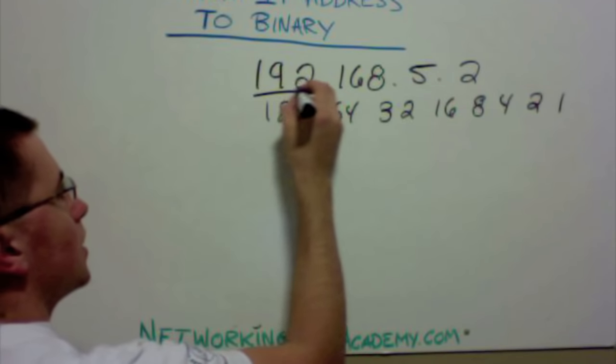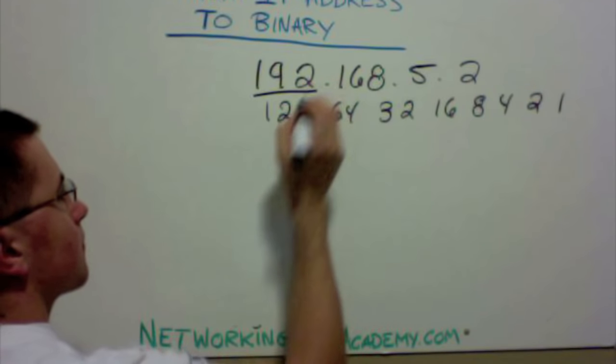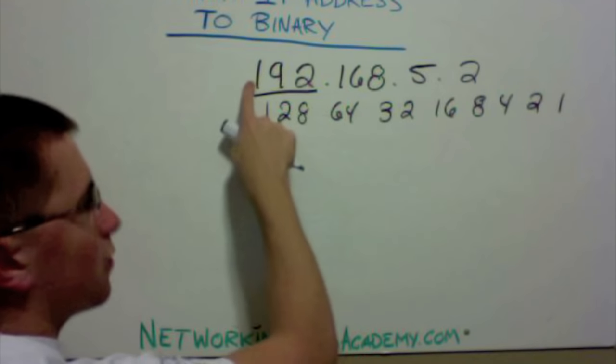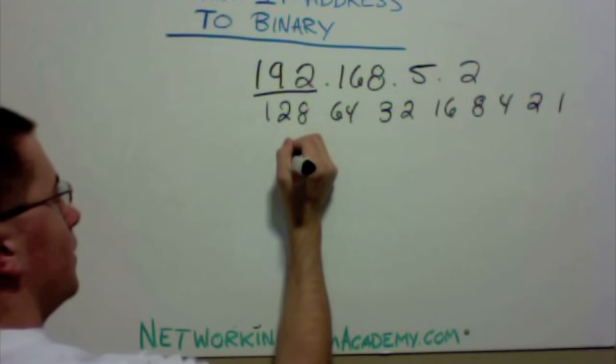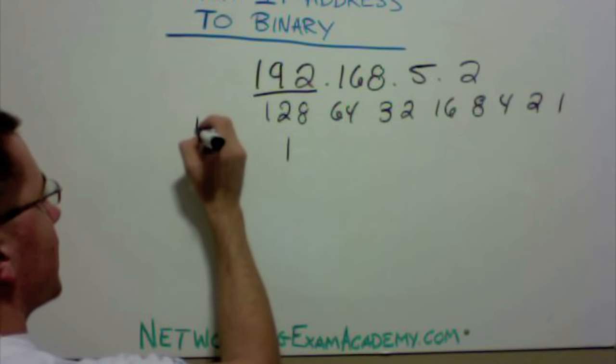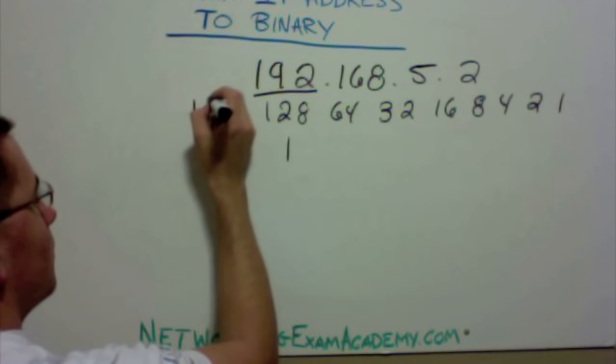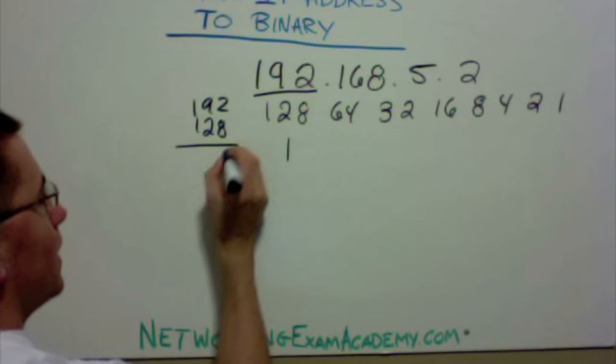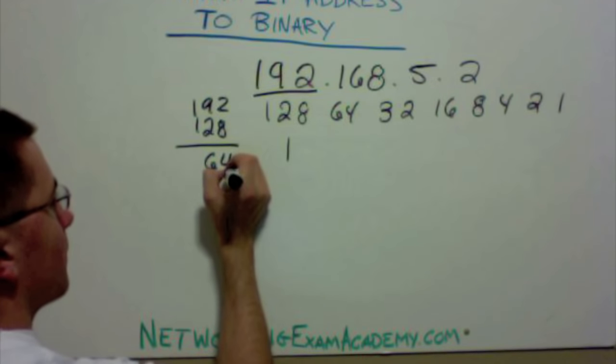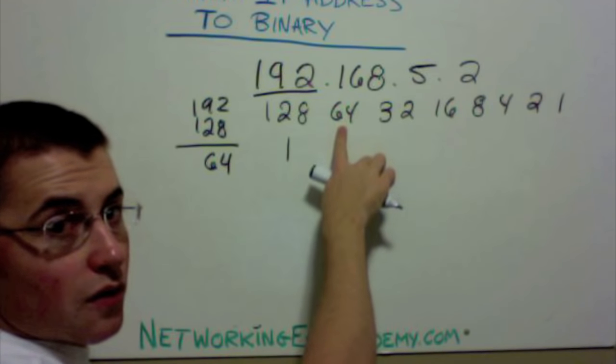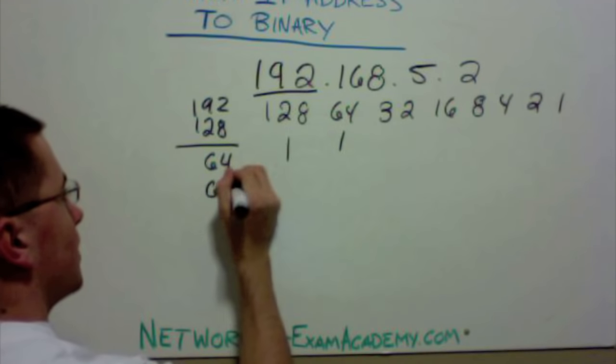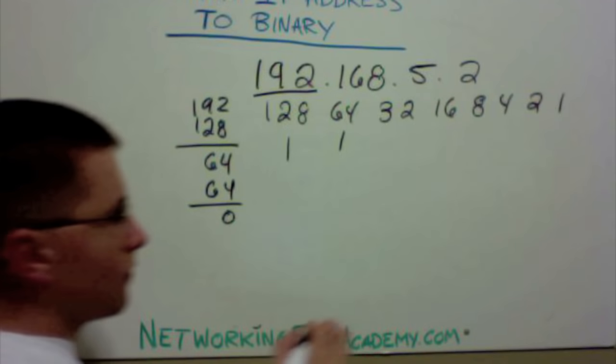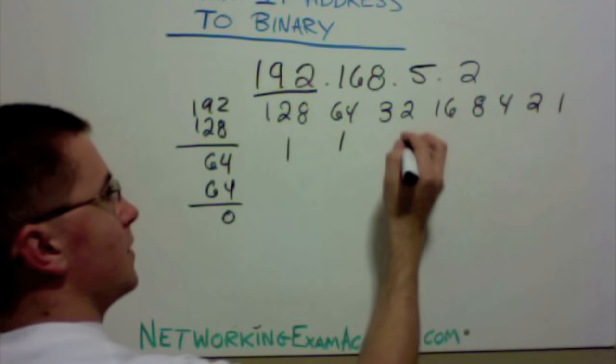First, let's start with 192. Does 128 go into 192? Yes, it does, so we place a 1 here. Now we need to subtract 128 from 192, and that leaves us with 64. Does 64 go into 64? Yes, it does. 64 minus 64 is 0, so we can place zeros for the remaining bits.